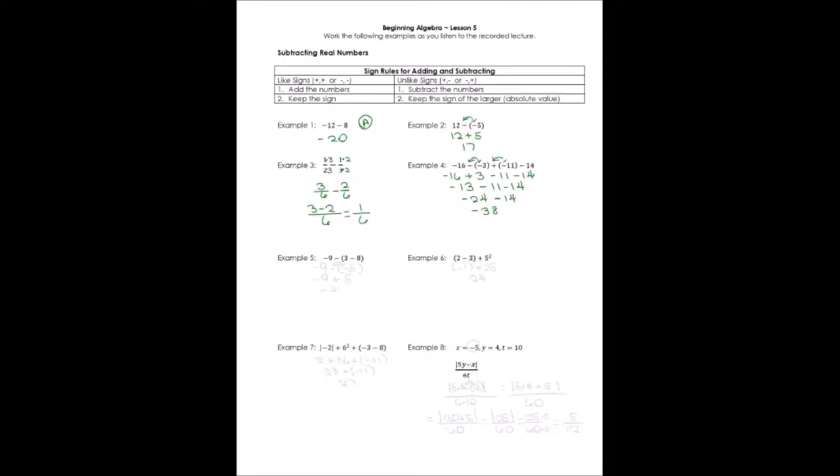Example 5 has me with parentheses, so I'm going to handle what happens in parentheses first. Everything else I just write down. Inside parentheses, it is 3 minus 8. Opposite signs, I'll subtract and keep the sign of the larger. Now I have two negatives together, I'm going to turn that into a positive. And I have opposite signs now, negative 9 positive 5. I'll subtract and keep the sign of the larger.